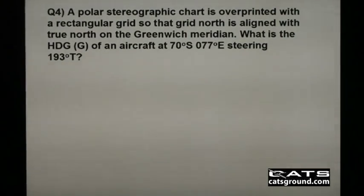In this question on grid navigation, a polar stereographic chart is overprinted with a rectangular grid so that grid north is aligned with true north on the Greenwich Meridian. What is the heading grid of an aircraft at 70 degrees south, 077 degrees east, steering 193 degrees true?